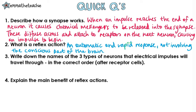Write down the names of the three types of neurons that electrical impulses will travel through, in the correct order, after the receptor cells. Okay, so after receptor cells are the sensory neuron, then the relay neuron, and finally the motor neuron.